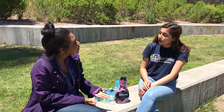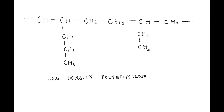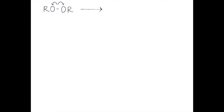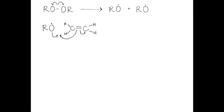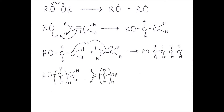For example, low density polyethylene, which is flexible and tough. Low density polyethylene is made by a free radical polymerization using organic peroxides. First, the peroxide bond is cleaved and interacts with a double bond of ethylene to create a radical intermediate. This intermediate then reacts with additional units of ethylene until the desired length is obtained. This produces long chains with many short branches.